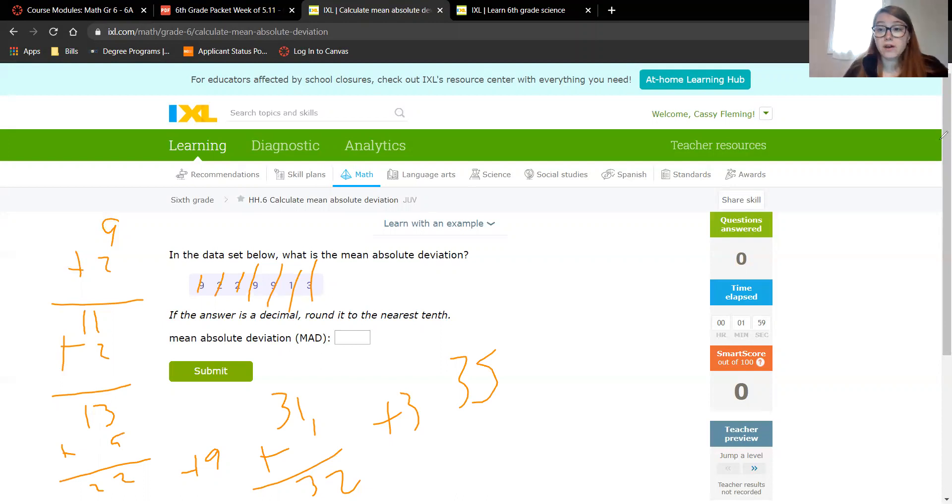So we know we need to divide 35 by something. That something is the total amount of numbers that are here. So we have 1, 2, 3, 4, 5, 6, 7. So we need to do 35 divided by 7. 7, 14, 21, 28, 35. 35 divided by 7 is 5. So our mean for the data is 5.